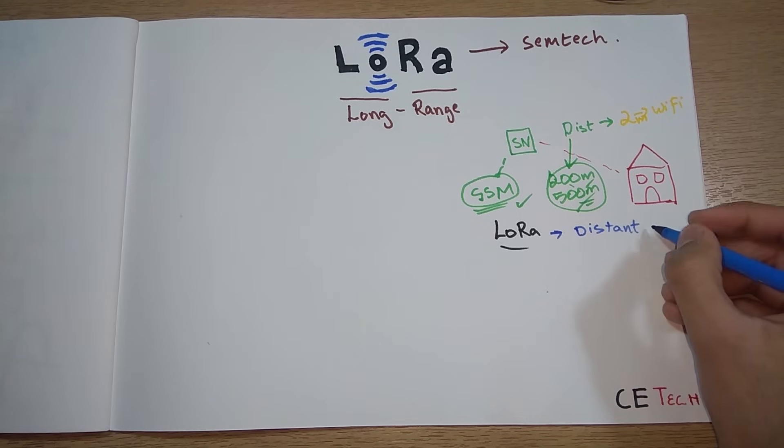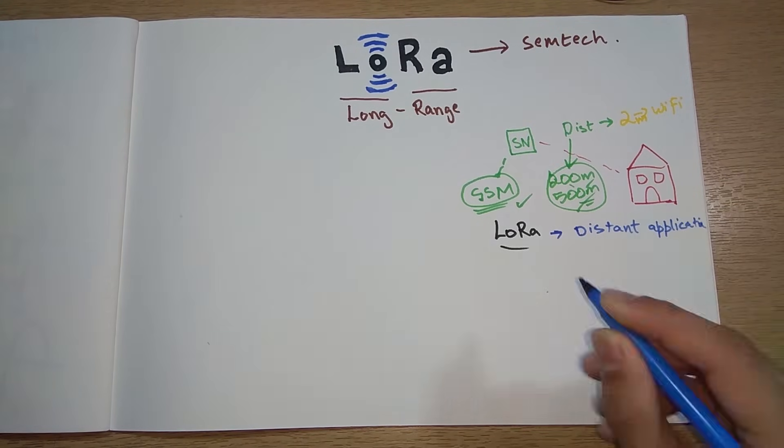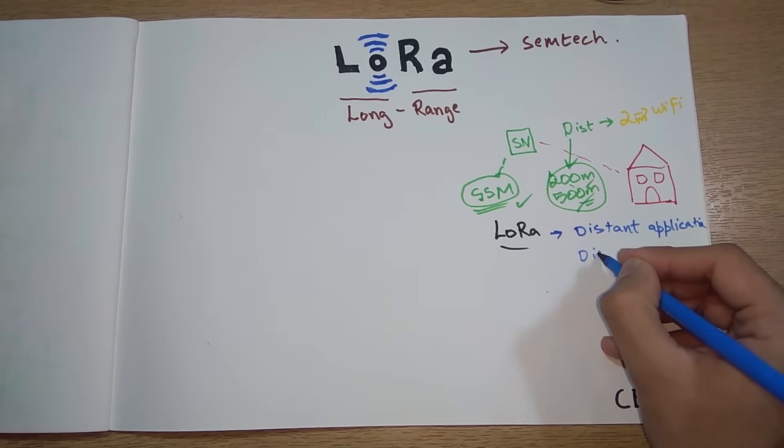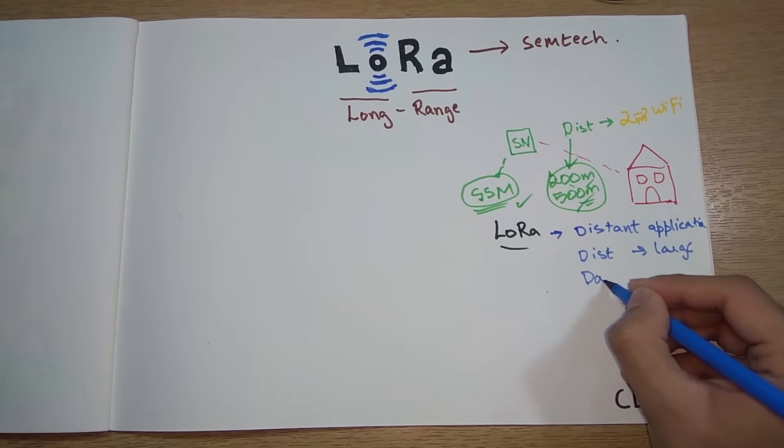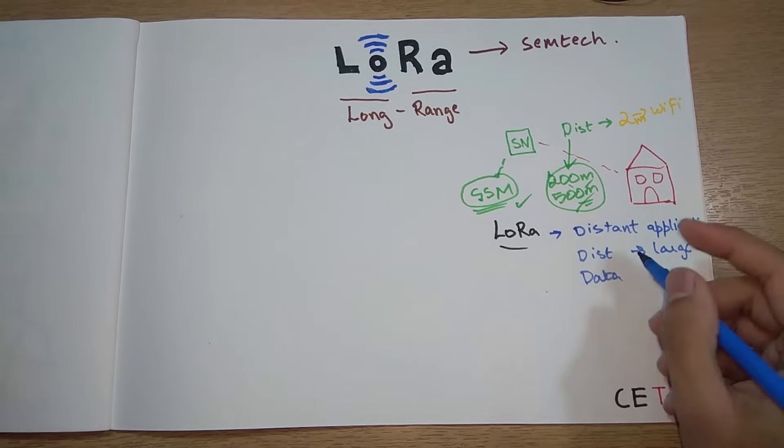You will just connect LoRa to the sensor node and you will also add one LoRa over here and that will do the work. LoRa is very useful in distant applications where the distance is large and the data that has to be sent is less.